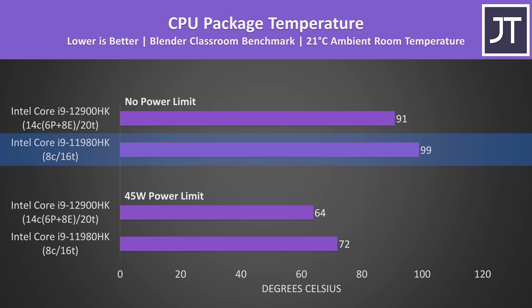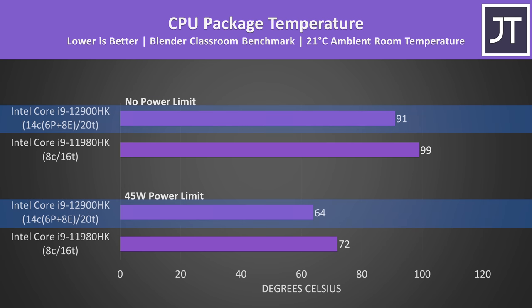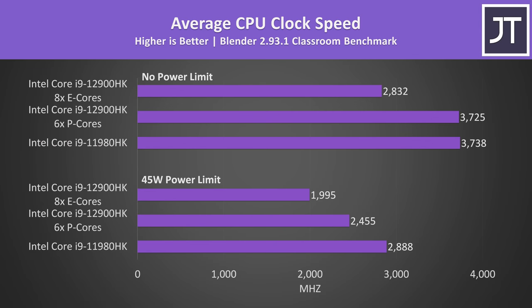The 11th gen machine was consistently thermal throttling in this test, however both 11th gen and 12th gen machines could spike into thermal throttling territory depending on the specific test. This can make things unfair, but it's also the real world in multi-threaded workloads with no power limit, and that's why I've also included the power limited results. Regardless of the power limit though, the 12900HK was reporting 8 degrees Celsius cooler. Looking at clock speeds measured during this same Blender test, with no power limit the 6 P cores in the 12th gen chip are clocking about the same as the 8 cores in the 11th gen chip.